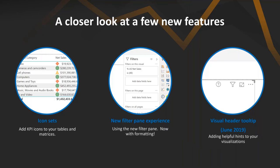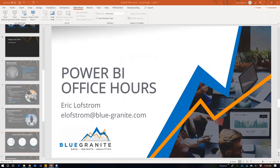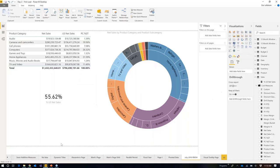For today's demo, I want to look at the new icon sets — a fun new conditional formatting feature — the new filter pane experience, and the visual header tooltip from last month that I didn't demo yet. I think it's going to be very useful as we try to make our reports more intuitive to end users. We'll also look at the Sunburst chart, and then get into the fiscal calendars use case.